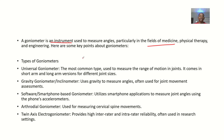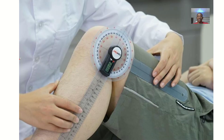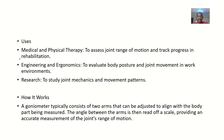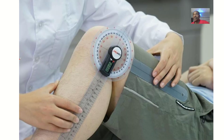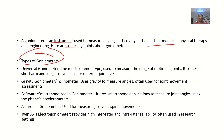Some key points to note about the goniometer: knowing the types is important. They are used to measure angles. For example, in orthopedics, if your patient is having some muscle stiffness or bone stiffness, you want to take the goniometer and measure the angle at which the patient can actually move that limb.